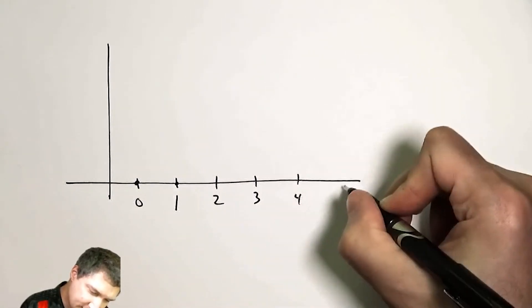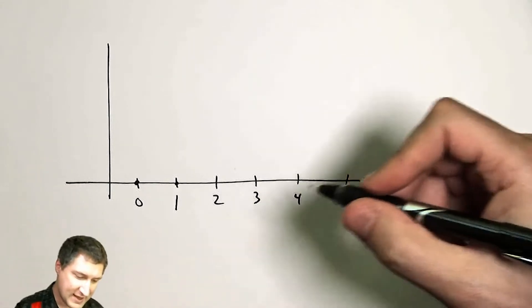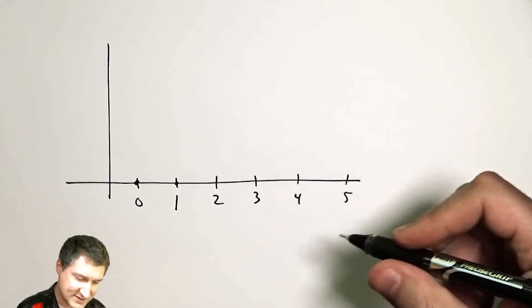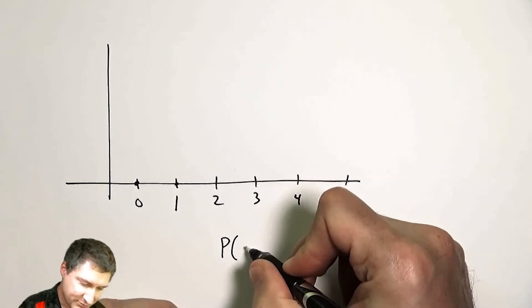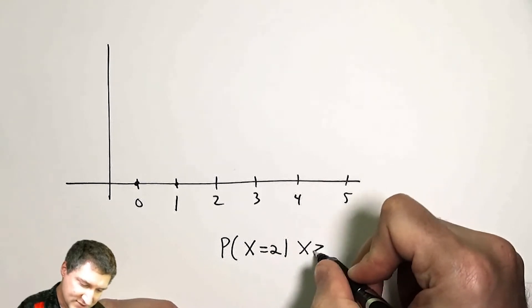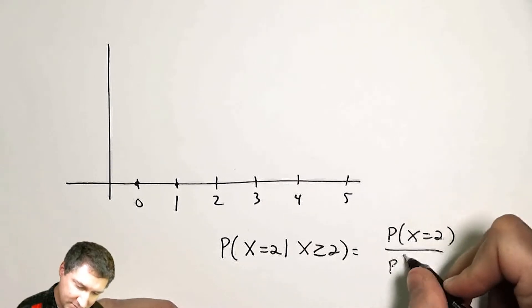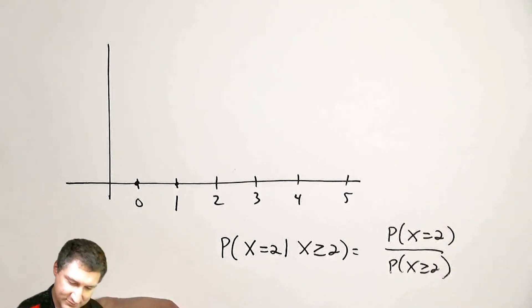And now, I take the 26 over 32 probability and I rearrange it. So that's like saying the probability that x equals two, given that x was at least two, is the probability that x equals two over the probability that x is at least equal to two.